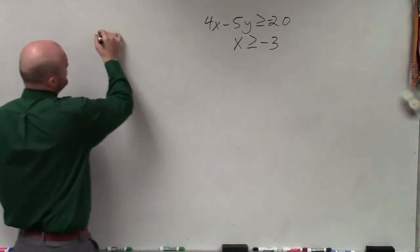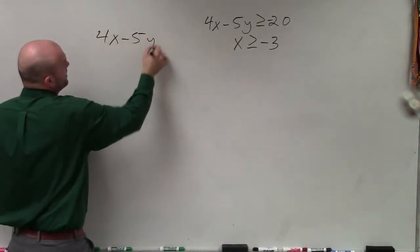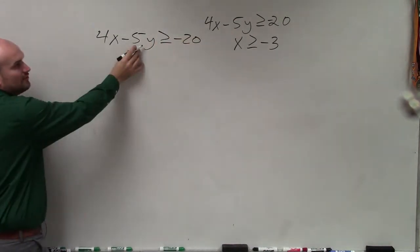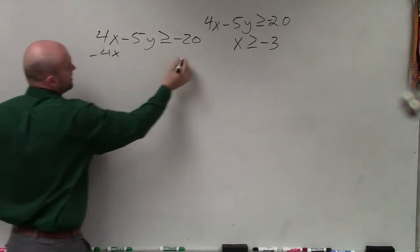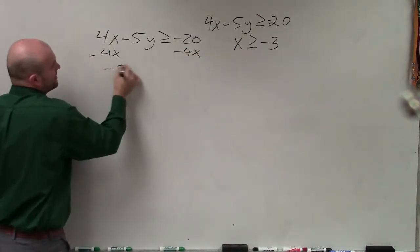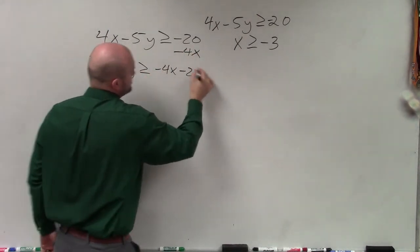So the first thing I think that's going to need some work, though, is rewriting this in slope-intercept form. So we've got to solve for y. So again, I subtract 4x. And I write negative 5y is greater than or equal to negative 4x minus 20.